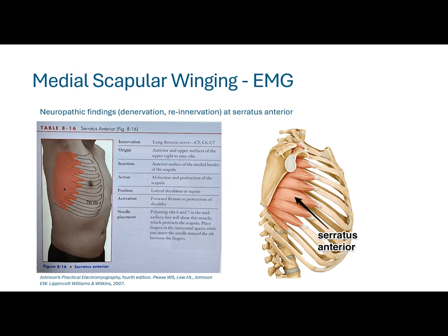On EMG, we're going to be looking for denervation or neuropathic findings isolated to the serratus anterior, or if we're thinking a more systemic condition causing scapular winging, we may see neuropathic findings elsewhere. A typical needling point is the 4th through 7th rib — you palpate the rib and dive the needle into the serratus anterior muscle, using the rib as a safety backstop. Make sure you're anterior to the latissimus dorsi as well.